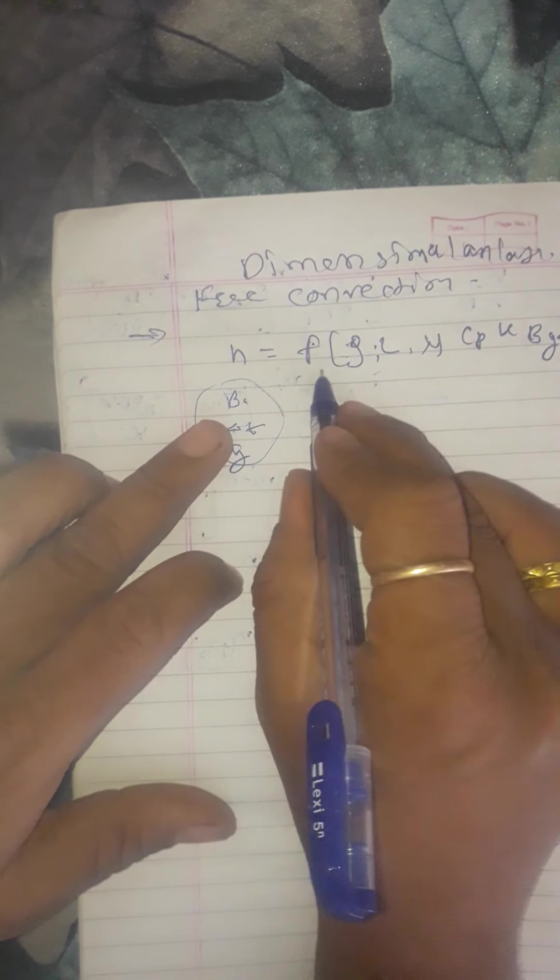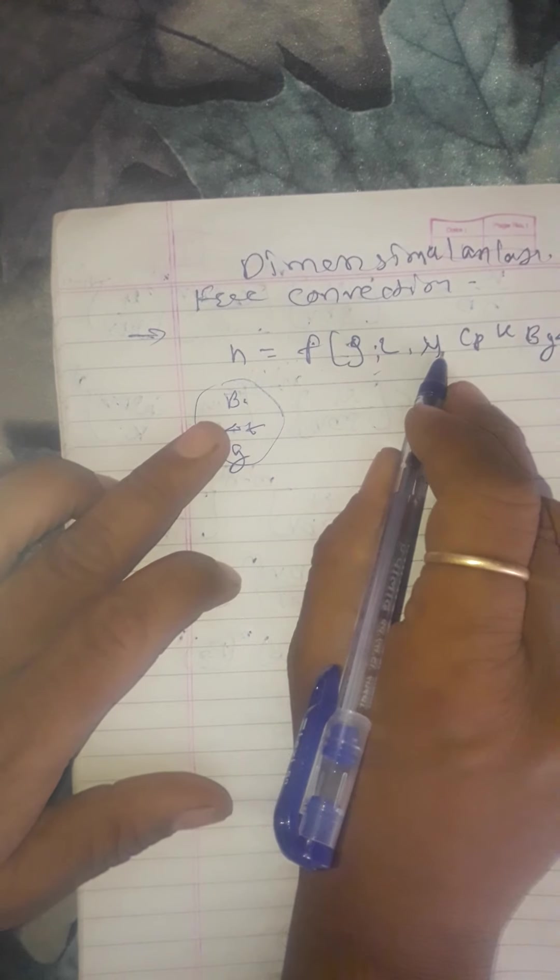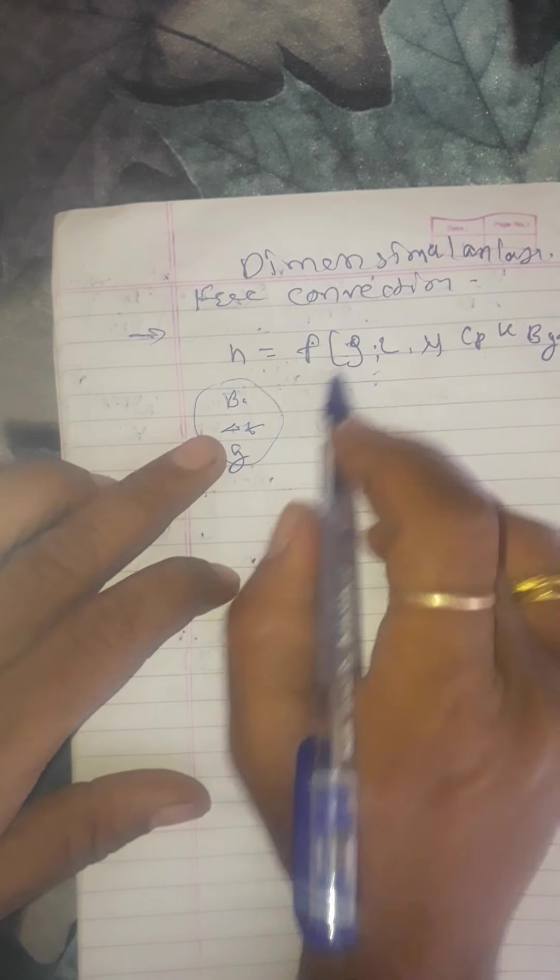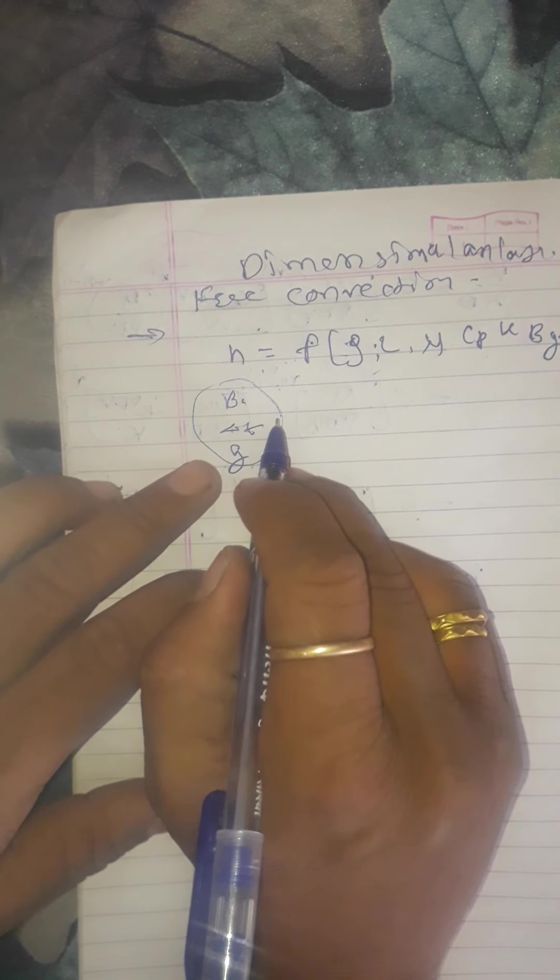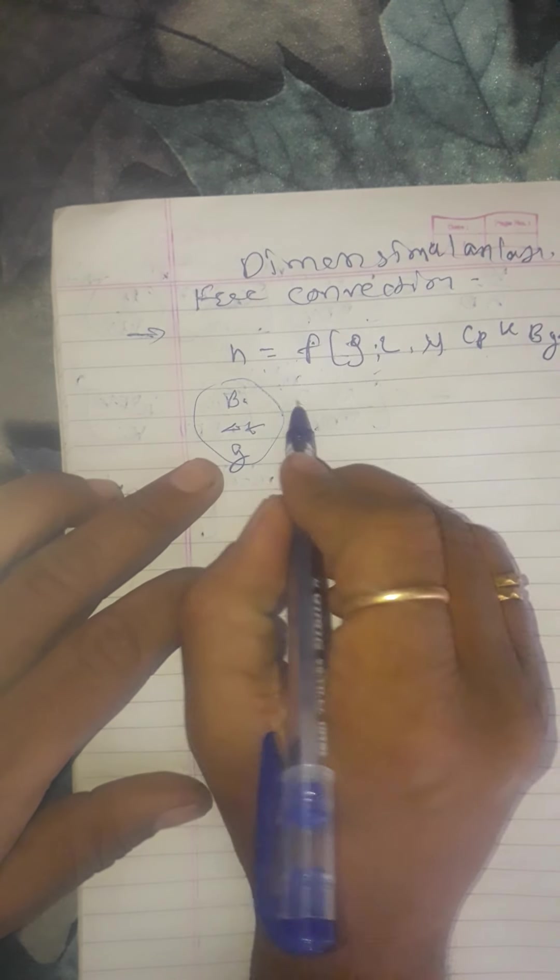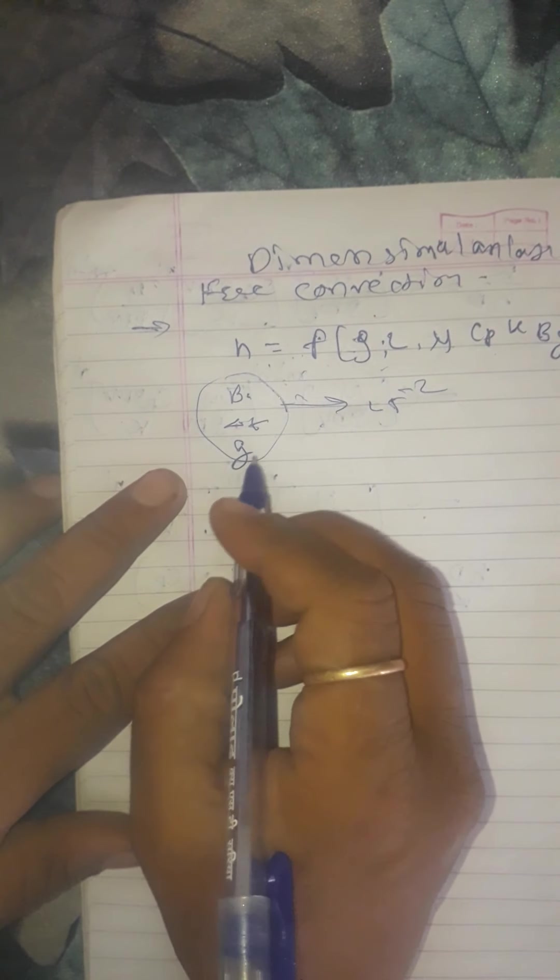So we have written here, H is a function of these parameters. The parameters represent the buoyant force as the dimension L T raised to minus 2. These are the dimensions for this.